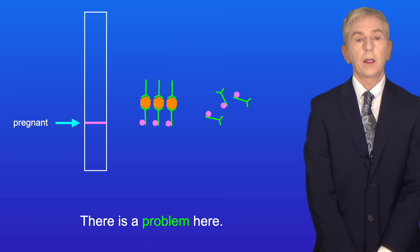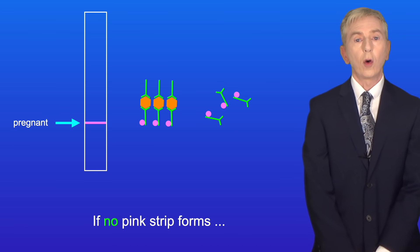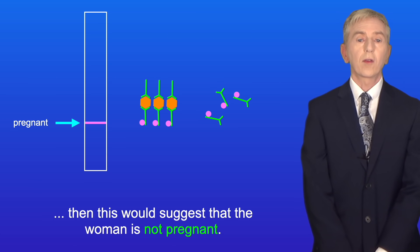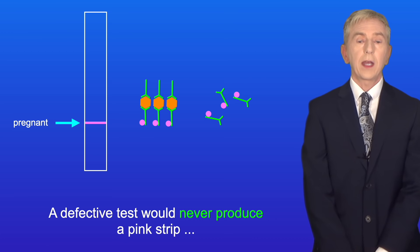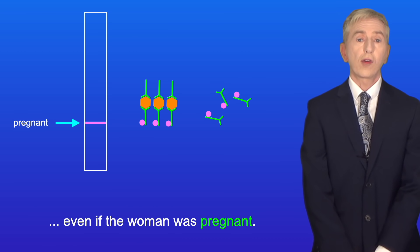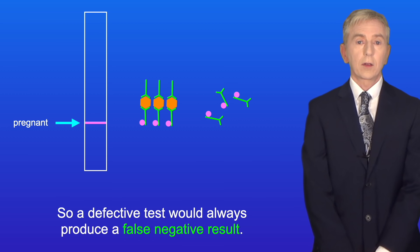Now there is a problem here. If no pink strip forms, then this would suggest that the woman is not pregnant. But what if the test was defective and did not contain any antibody? A defective test would never produce a pink strip, even if the woman was pregnant. So a defective test would always produce a false negative result.